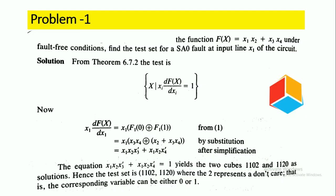Here is the problem: the function f(x) equals x1·x2 + x3·x4 under fault-free conditions. Find the test set for a stuck-at-0 fault at input line x1 of the circuit. So this function f(x) is given as x1·x2 + x3·x4.